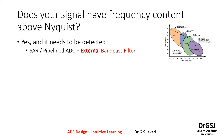If you have this frequency content above Nyquist and it needs to be detected, then you will typically use a SAR or a pipeline ADC with an external band pass filter. Looking at the graph we had seen earlier with four or five bands: the first was sigma delta for industrial precision applications, the next was voice and data with sigma delta, third was SAR ADC, and fourth was pipeline ADC. Near and above the Nyquist content, an external band pass filter would be needed along with a SAR ADC.